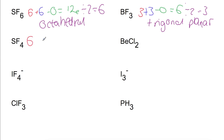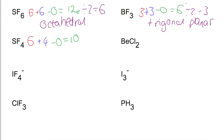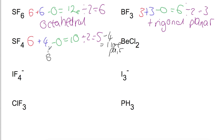Looking at a different sulfur compound (SF4): sulfur has six electrons, plus four atoms attached and no charge, giving ten electrons. Dividing by two gives five electron pairs, but with four things attached we have one lone pair. So we are placing five electron pairs around the sulfur, only four of which are bonding. This means it's based on a trigonal bipyramid, with the four fluorines arranged to give the most space for the lone pair.